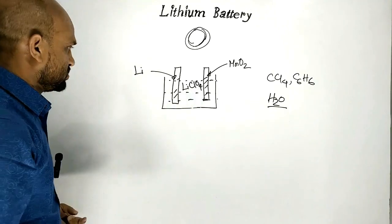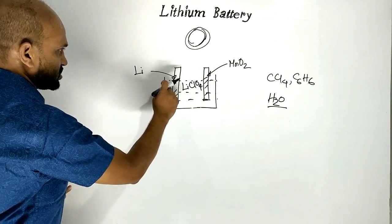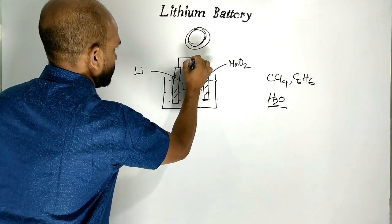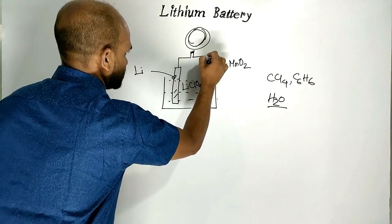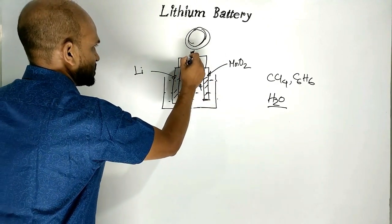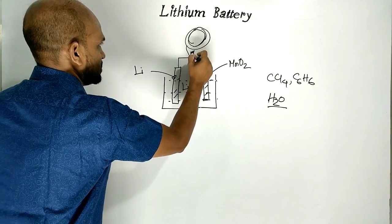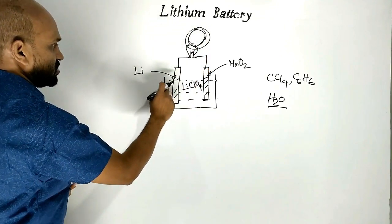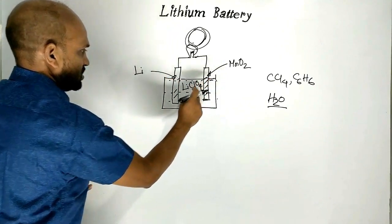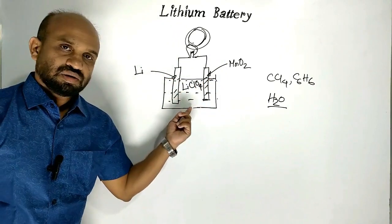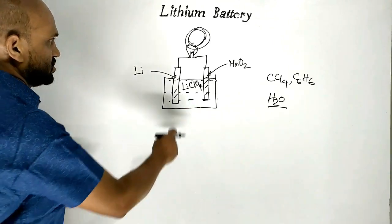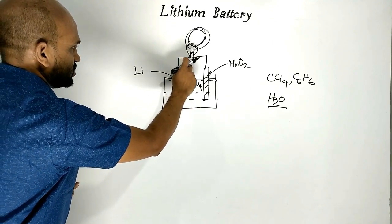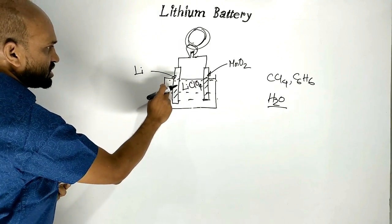Now these two electrodes are connected with a load — suppose it is a kind of bulb. When it is connected to the bulb or electric load, the reaction starts.